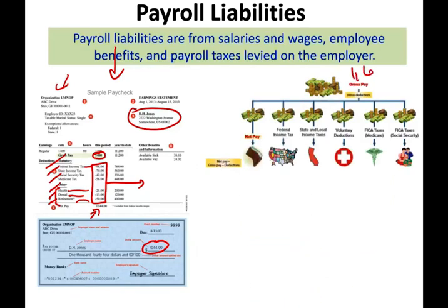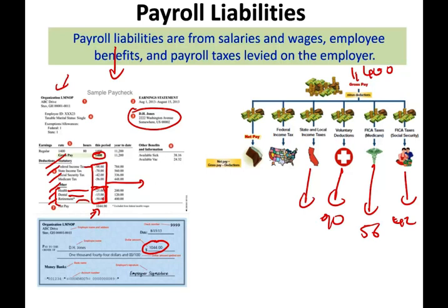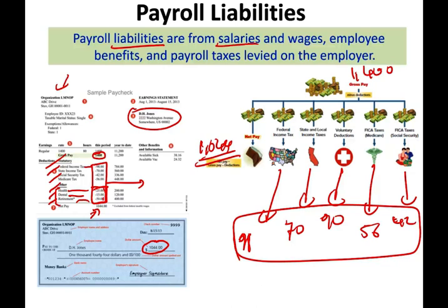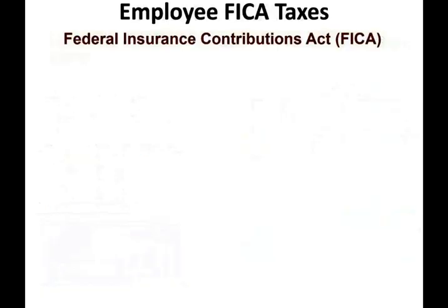Looking at the same paycheck from another angle: gross pay is $1,400. We have a Social Security deduction of $42 and a Medicare deduction of $56. Voluntary deductions — the $25, $15, and $50 — total $90. State took $70 and federal took $98. Net pay is $1,044. Payroll liabilities come from salaries and wages, employee benefits, and payroll taxes levied on the employer.